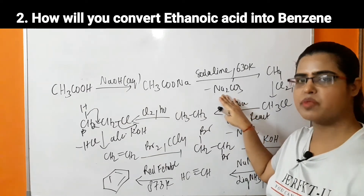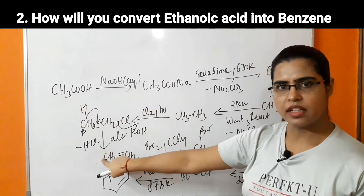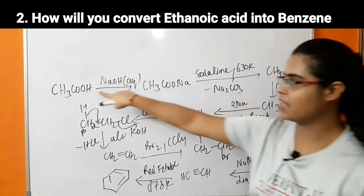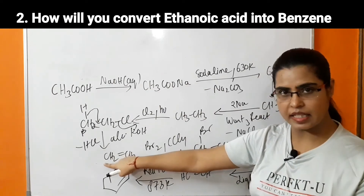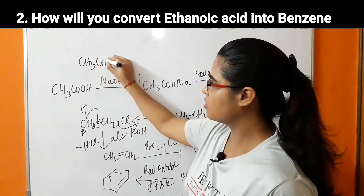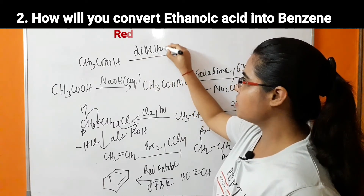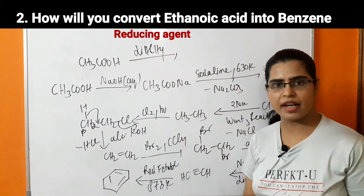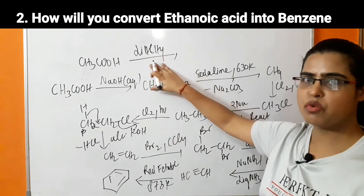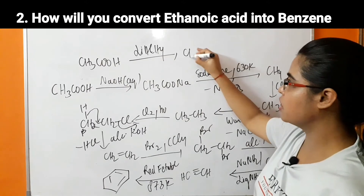This conversion is a little long, so we can decrease the number of steps. We can directly convert acetic acid into ethene — then the further sequence of reactions will be the same but the number of steps is decreased. What we can do is react acetic acid, CH₃COOH, in the presence of LiAlH₄ — lithium aluminum hydride, a reducing agent — which helps in removal of oxygen and addition of hydrogen, so there will be formation of ethanol.